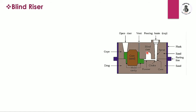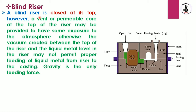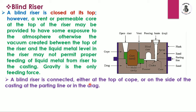Now discussing the blind riser: a blind riser is closed at its top. However, a vent or permeable core at the top of the riser may be provided to have some exposure to the atmosphere; otherwise the vacuum created between the top of the riser and liquid metal level in the riser may not permit proper feeding of liquid metal from the riser to the casting. Gravity is the only feeding force. A blind riser is connected either at the top of the core, on the side of the casting at the parting line, or in the drag.